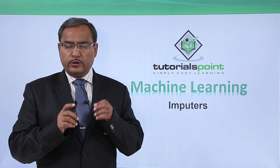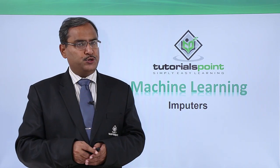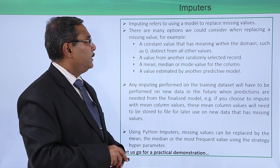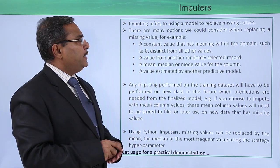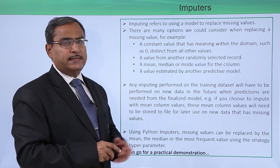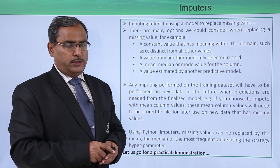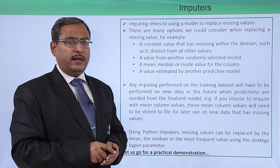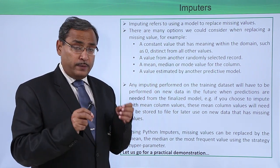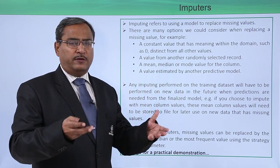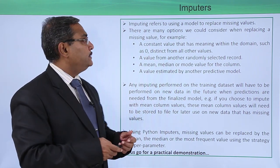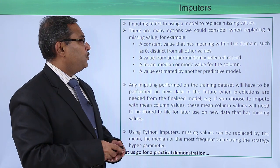In this video, we are going to discuss inputters. Imputing refers to using a model to replace missing values. Whenever we have some missing values in the dataset, we replace the missing value with some other value using some logic — that is handled by the imputing process.